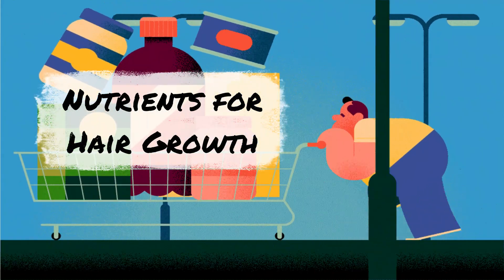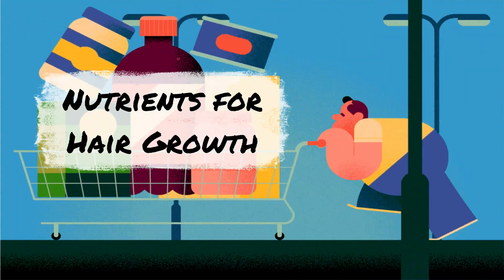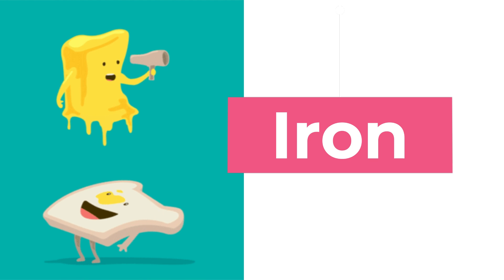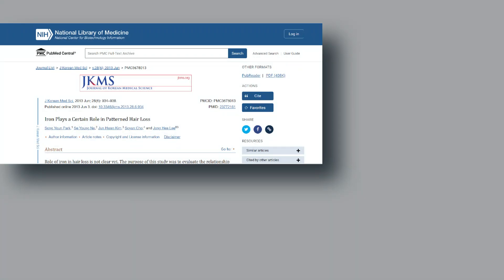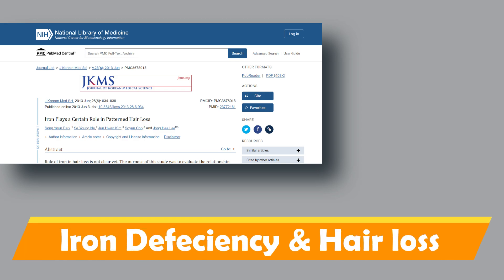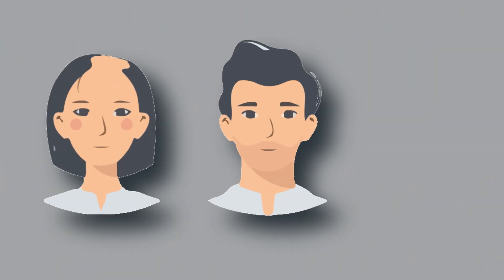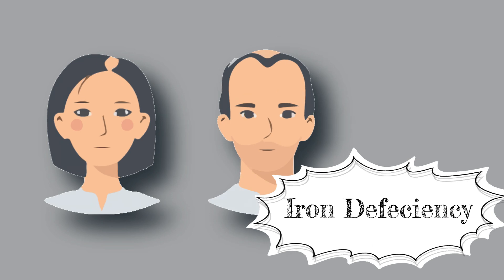Now I will tell you about some nutrients that help fight hair loss and promote hair growth. So let's start with the first nutrient, iron. According to a study done in 2013, there is a relation between iron deficiency anemia and hair loss. It was seen that male pattern hair loss and female pattern hair loss patients usually had iron deficiency.